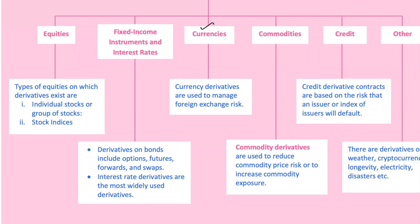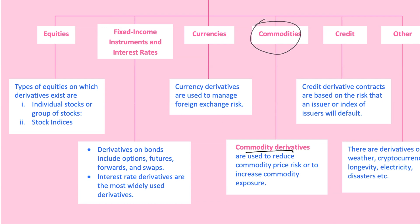Currency and commodity derivatives are also key players. Currency derivatives manage foreign exchange risk — say a UK based business expects a payment in US dollars in three months. To guard against currency fluctuation, they can use a forward contract to lock in the exchange rate. Commodity derivatives cover everything from agriculture to metals, helping businesses stabilize costs. For instance, airlines use oil futures to lock in fuel prices to avoid unexpected spikes, ensuring stable operational costs.